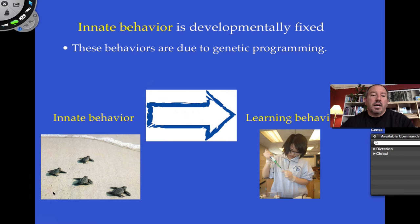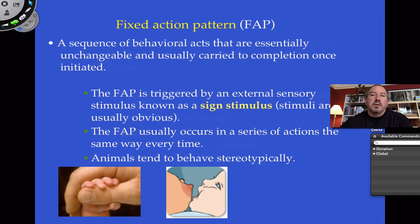For example, these sea turtles — as soon as they're hatched from eggs on the beach, they instinctively start running towards the water. It's innate behavior, and they're in a lot of danger if they don't. We're going to look at all the different types of behaviors between innate behavior and learned behavior. Learned behavior is experience-based modification.